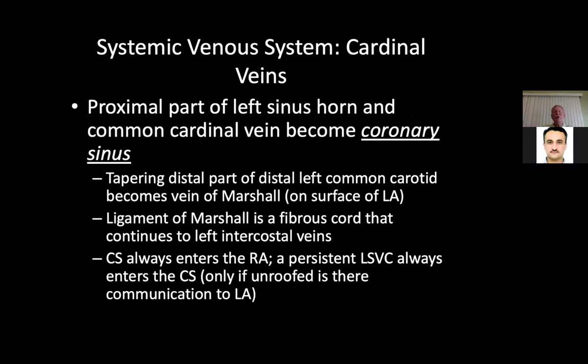The proximal part of the left sinus horn and the common cardinal vein become the coronary sinus, and the tapering distal part becomes the vein of Marshall. The ligament of Marshall is a fibrous cord that continues to the left intercostal veins. The coronary sinus always enters the right atrium; a persistent left SVC always enters the coronary sinus — only if unroofed is there communication to the left atrium. A persistent left cardinal vein draining directly to the roof of the left atrium is very rare; the speaker saw it once and it complicated a tetralogy of Fallot repair.